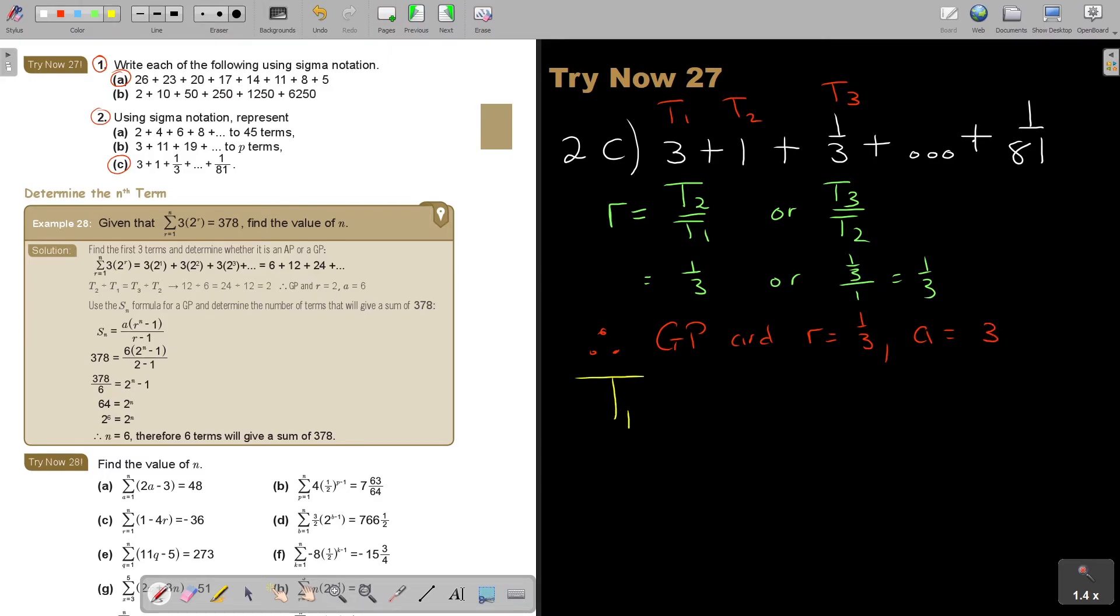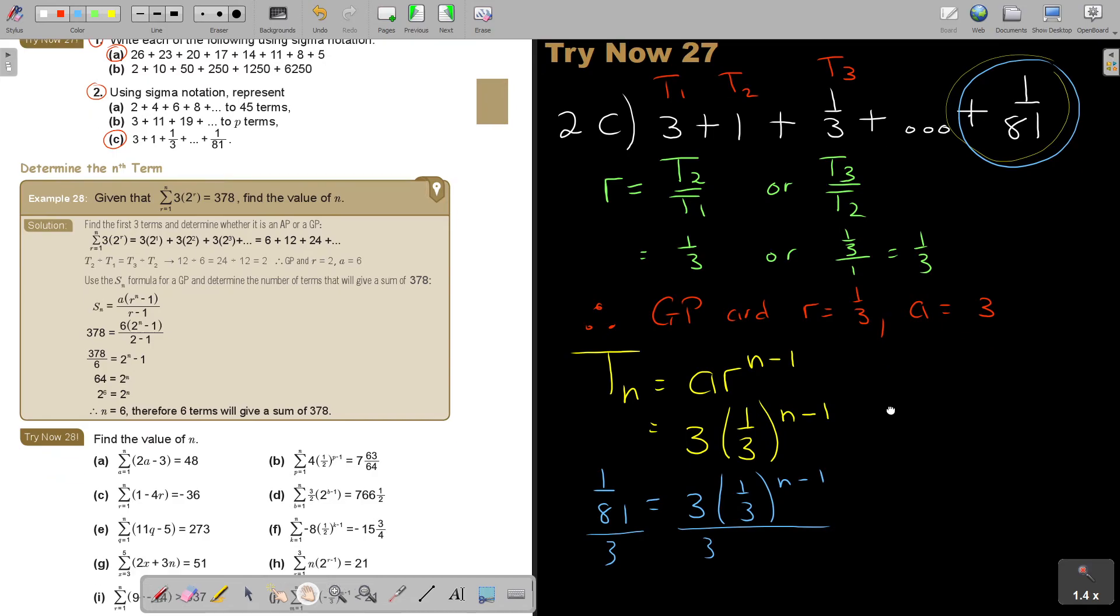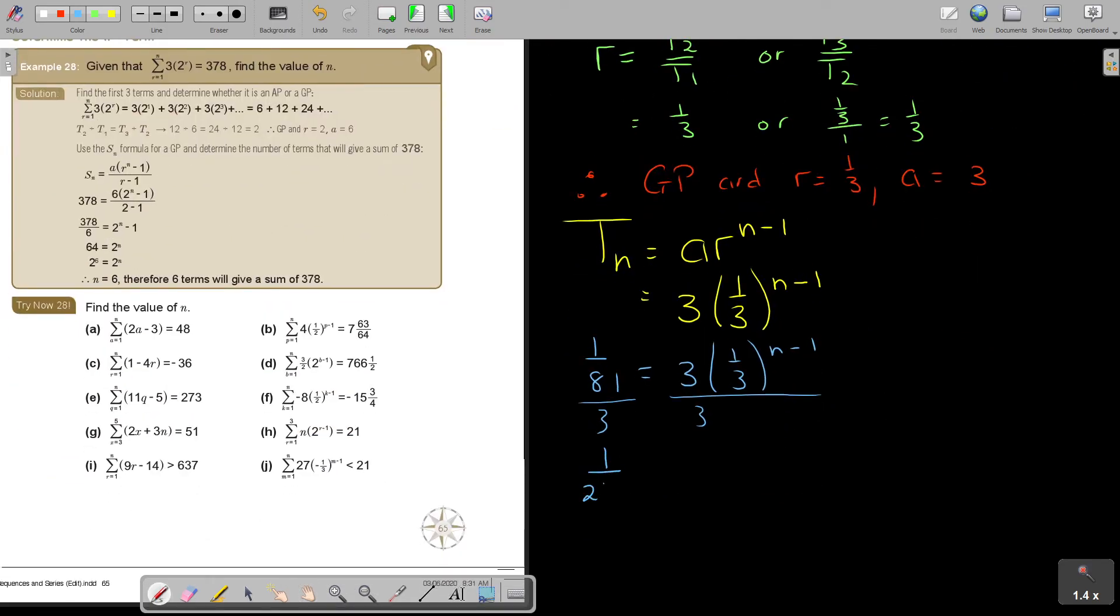Now, don't forget your general formula. So it's A times R to the N minus 1. So in the place of A, I will put 3. In the place of R, it's a third and it's N minus 1. I don't think I can simplify this further. But what I can do is I must find this position. This is not good because now I cannot count. So I'm going to just say 1 over 81 is equal to 3 times a third to the N minus 1. Now, I divide by 3. Isolate first this. So 1 over 81 divide 3, it's going to be 1 over 243 equals a third to the N minus 1.